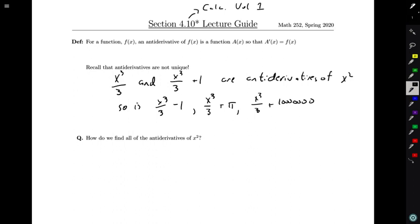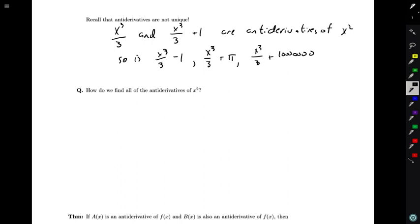So there's a question though of, is this all of them? Are there any more antiderivatives that maybe don't even have x³/3 in them at all? So we have this question of, how do we find all of the antiderivatives of x²?